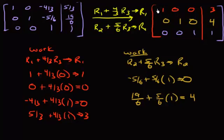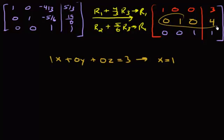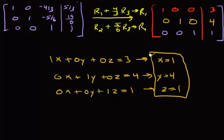So we are completely done row reducing. Let's just write out our answers now. The first line says 1x plus 0y plus 0z equals 3, so x equals 3. The second line says 0x plus 1y plus 0z equals 4, so y equals 4. And the last row says 0x plus 0y plus 1z equals 1, so z equals 1. And there is our final answer to our system of equations. Please go back and make sure that these work. That's it.